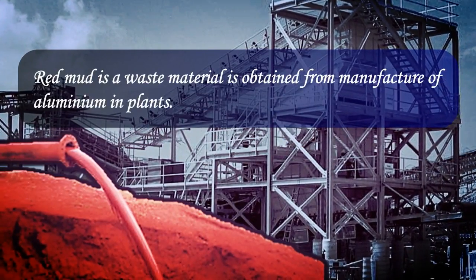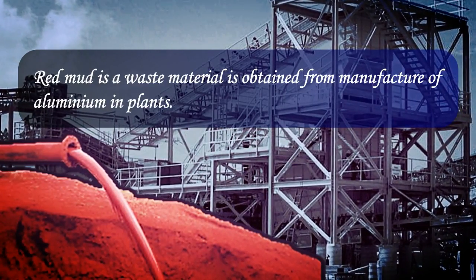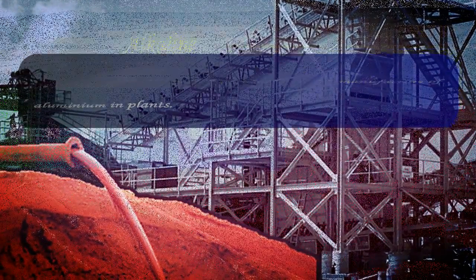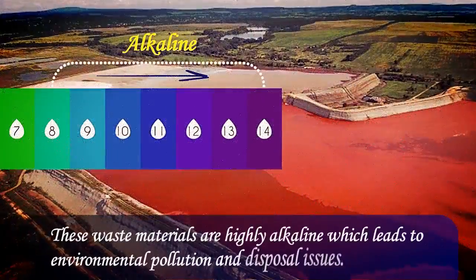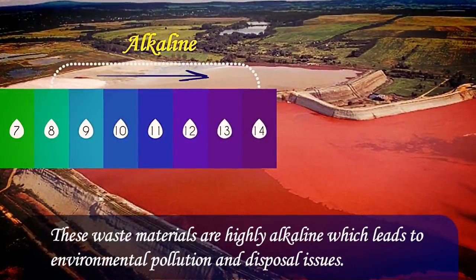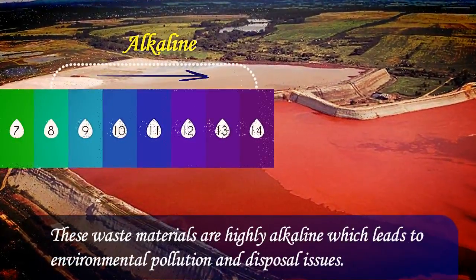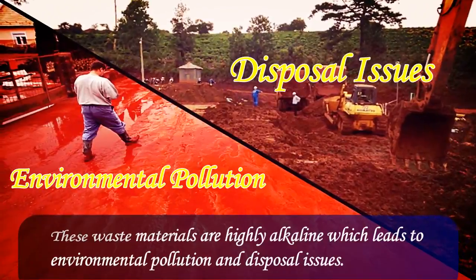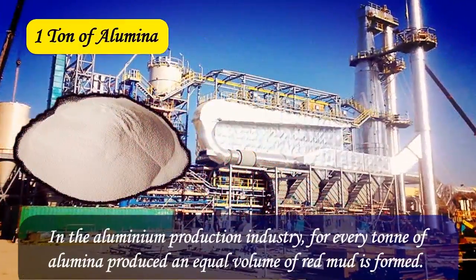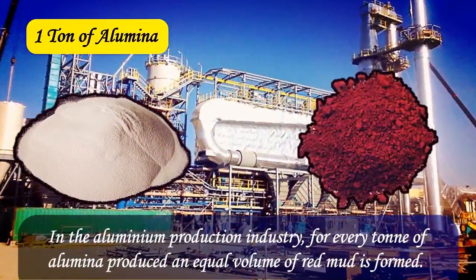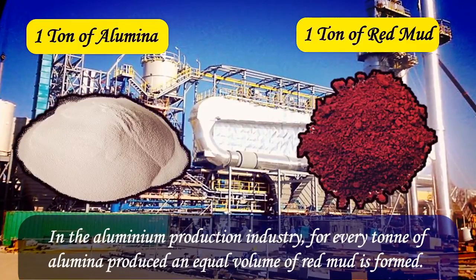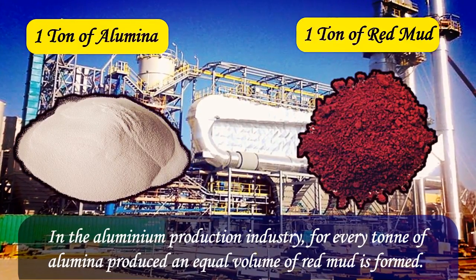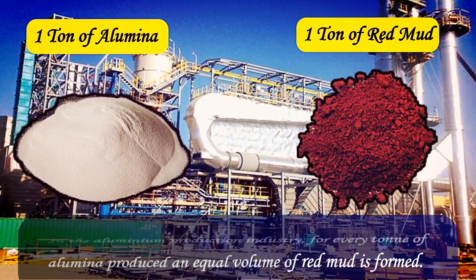Red mud is a waste material obtained from the manufacture of aluminium in plants. These waste materials are highly alkaline, which leads to environmental pollution and disposal issues. In the aluminium production industry, for every ton of alumina produced, an equal volume of red mud is formed.